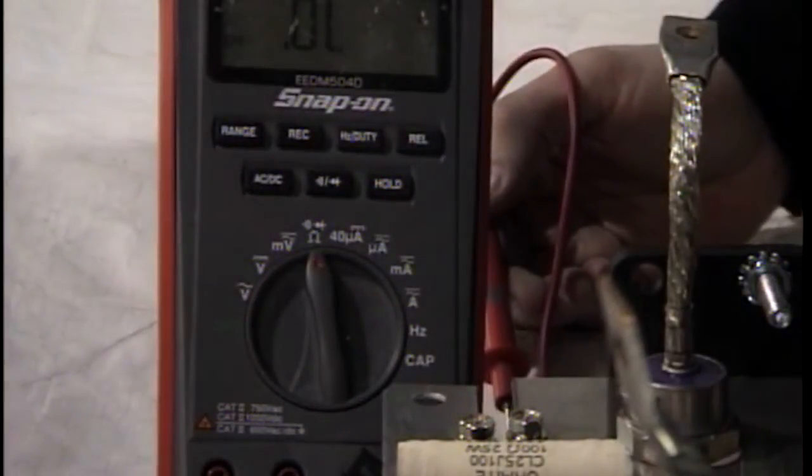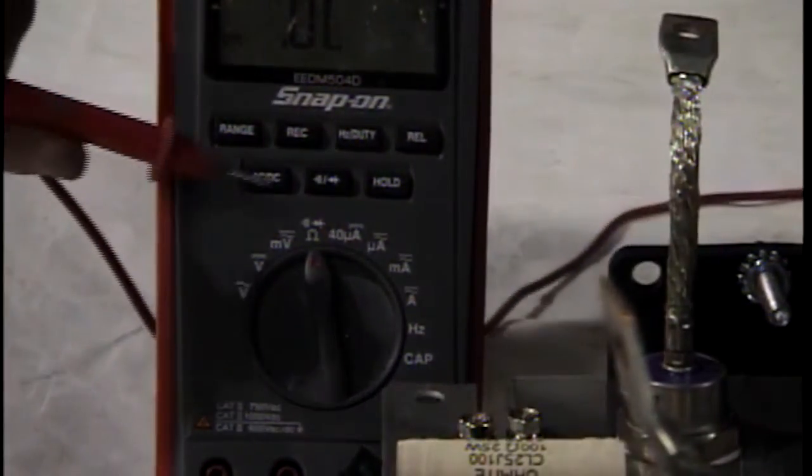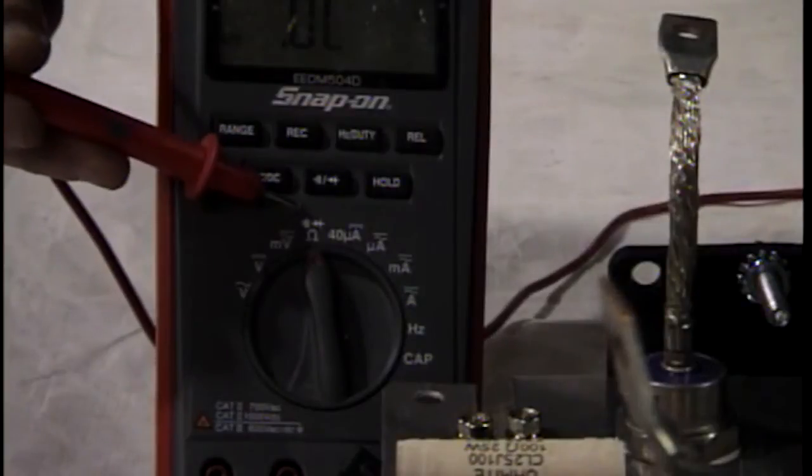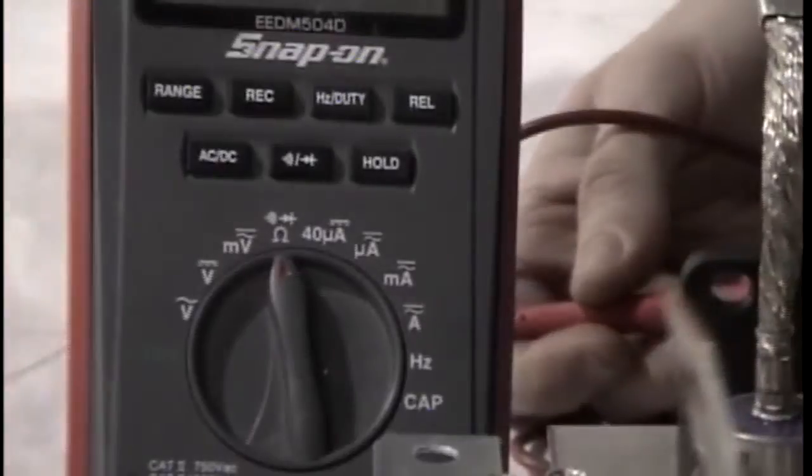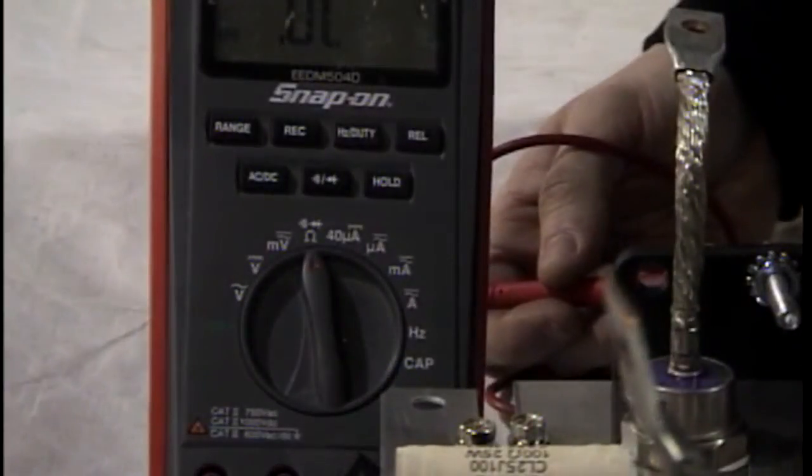Once you have your meter set up to your diode scale, which is this little indicator here that looks like an arrowhead with a plus sign in front of it, you will read your diode in two directions.